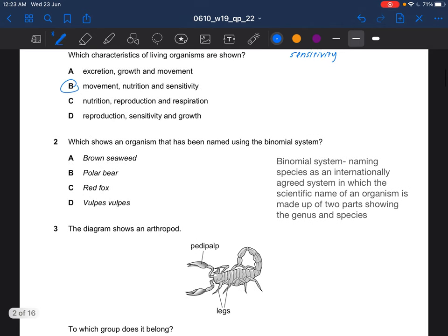Next question, which shows an organism that has been named using the binomial system. The scientific name would be made of two parts, which is the genus followed by the species. So the answer would be D, the scientific name.